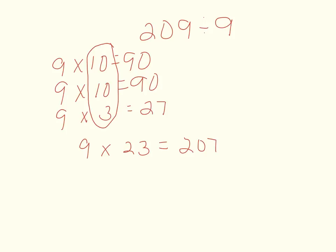But I need 2 more to reach my dividend. So 207 plus 2 is 209. Therefore, 209 divided by 9 is equal to 23 with a remainder of 2.